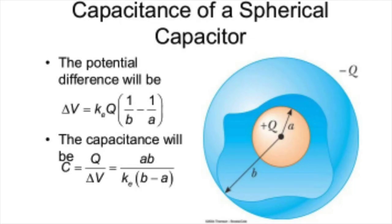The physics of capacitors can be generalized to other devices and to any situation involving electric fields. For example, Earth's atmospheric electric field is modeled by meteorologists as being produced by a huge spherical capacitor that partially discharges via lightning.